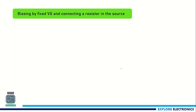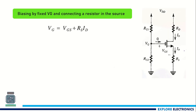The next biasing method is biasing using a fixed VG with a resistor RS connected at the source. Comparing with the previous circuit, we have an extra resistor RS here. If we fix VG using a voltage divider circuit, VGS is not the same as VG — instead, VGS plus the voltage drop across RS, which is RS times ID, equals VG. We need to understand how RS makes a compensation and brings ID back to a constant value.